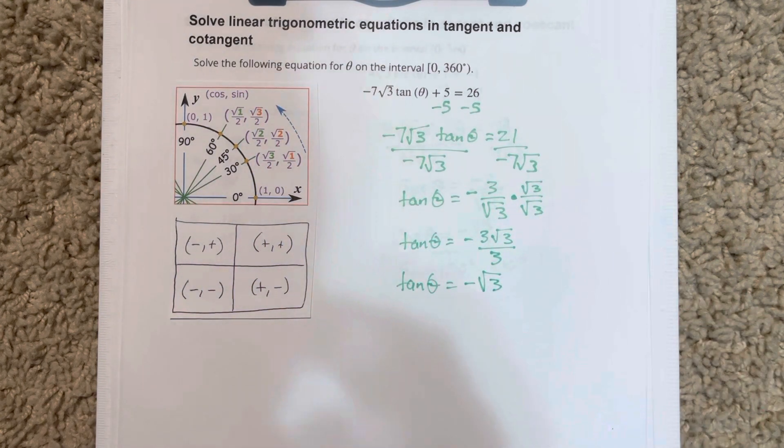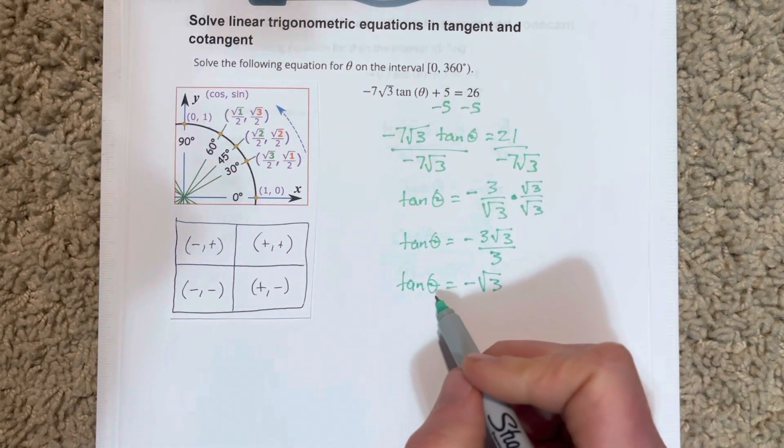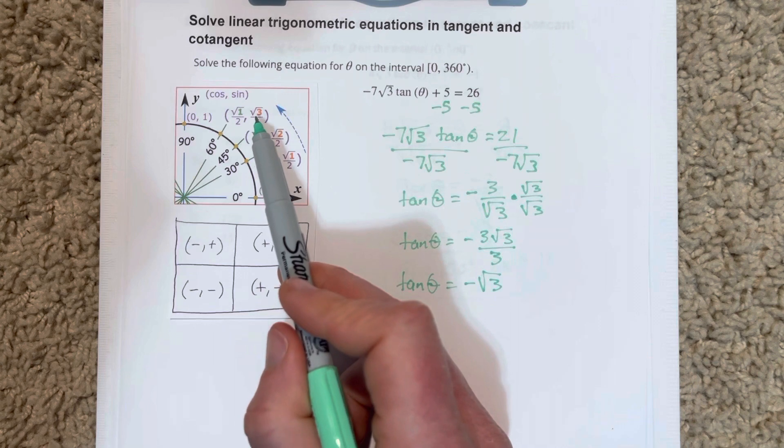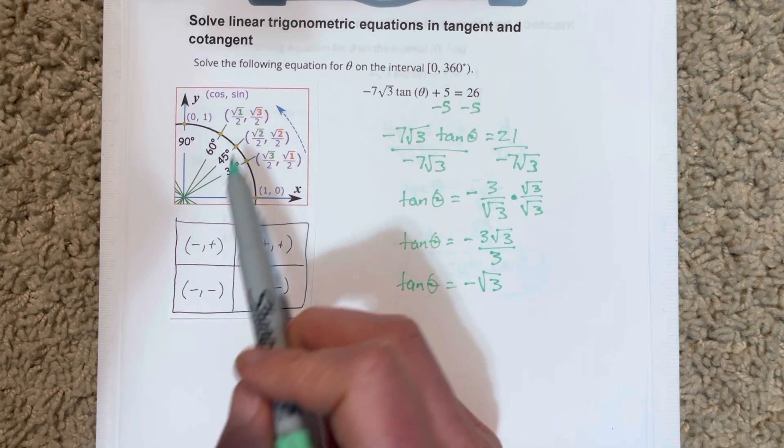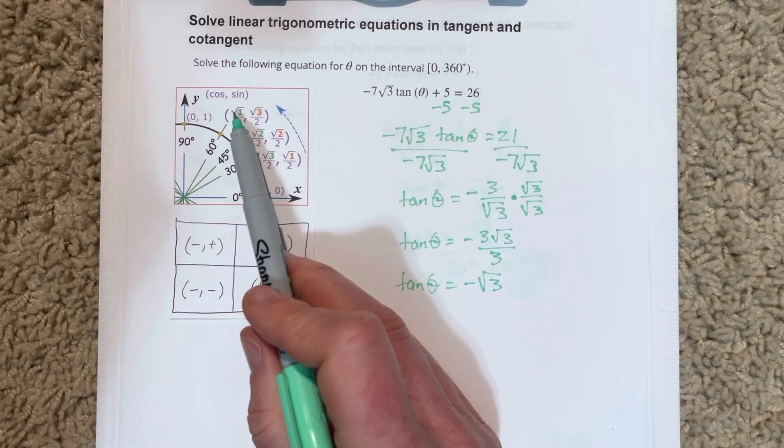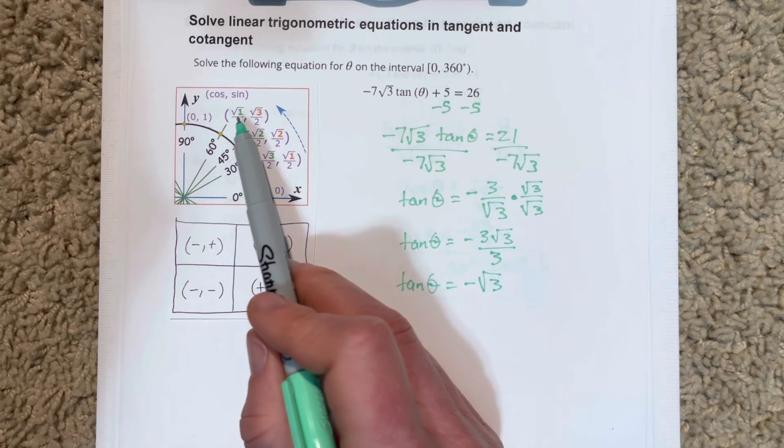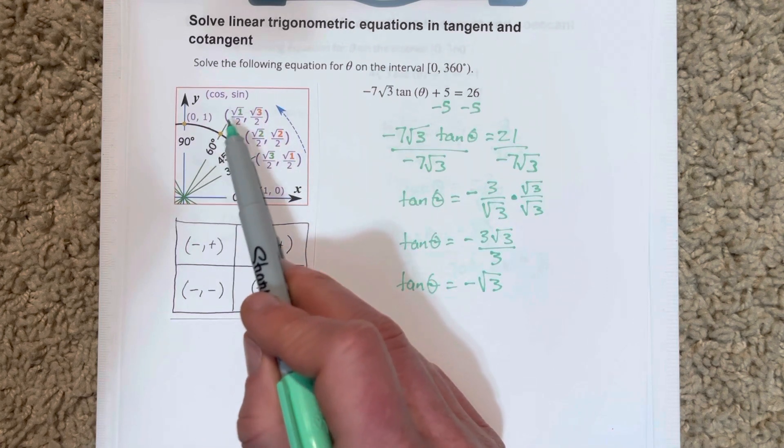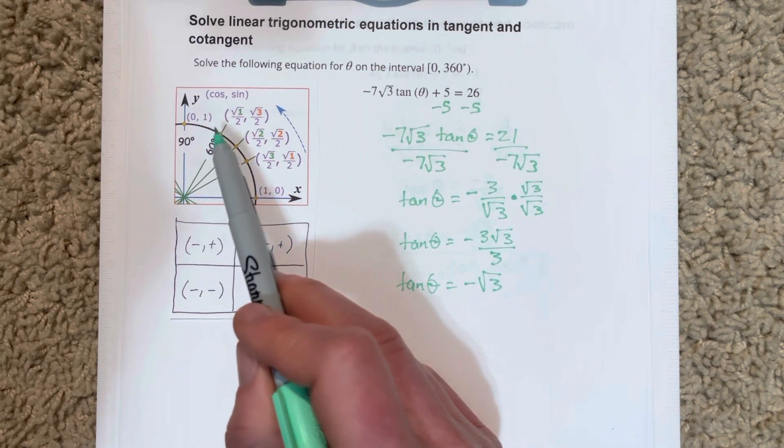I want to look at the first quadrant and figure out when tangent theta equals root 3. Tangent theta equals root 3 at 60 degrees because tangent is sine, which is root 3 over 2, divided by cosine, which is 1 over 2. When I divide fractions, I flip and multiply and the 2s cancel. So tangent equals root 3 at 60 degrees.